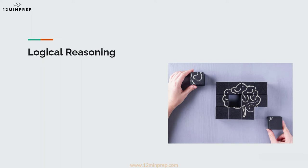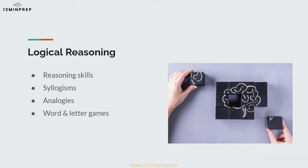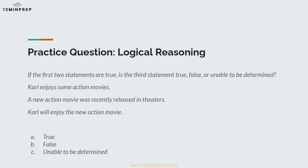The last question type we will look at is logical reasoning. These questions will assess your reasoning skills and your ability to draw conclusions based on limited information provided to you. You may see questions known as syllogisms, analogies, and various word and letter games. The correct answer is "unable to be determined." The first statement tells us that Carl only enjoys some action movies, meaning he does not necessarily enjoy all action movies. This means we cannot determine whether or not he will enjoy the new movie.